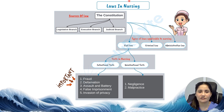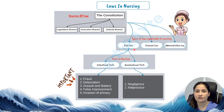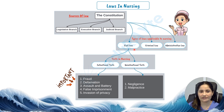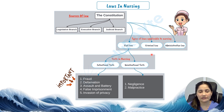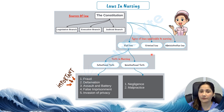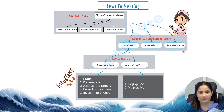Nurses need to pay attention to three main types of laws: civil law, criminal law, and administrative law. Civil law is about relationships and responsibilities between people — for instance, if a nurse-patient contract is broken, that is a civil law issue. Criminal law covers actions that are offenses against society, like a nurse who steals medication. Administrative law covers regulations from nursing boards or health departments, like the rules about maintaining a nursing license.